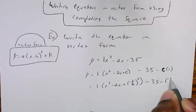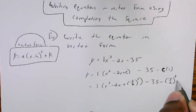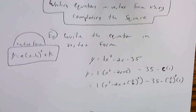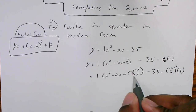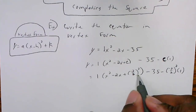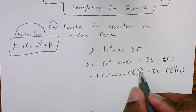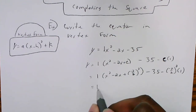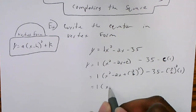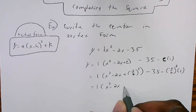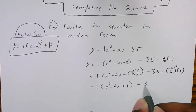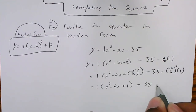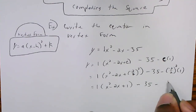Subtracting c times 1 outside: 1 times 1 is 1. So now I have 1 times (x squared minus 2x plus 1) minus 35 minus 1. Negative 2 over 2 is negative 1, and negative 1 squared is positive 1, confirming c equals 1.